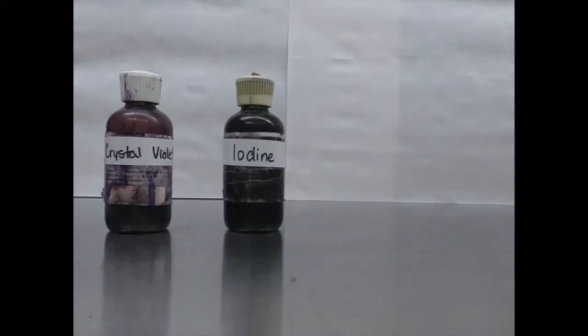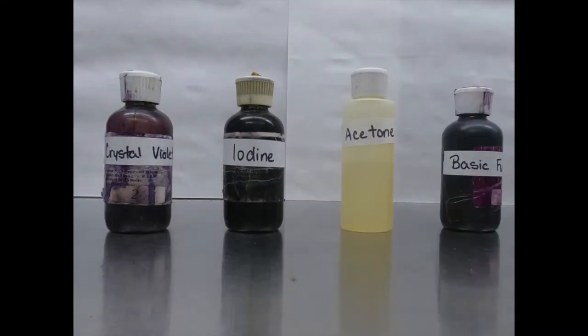There's four basic reagents required for a gram stain: crystal violet and grams iodine for our primary stain, acetone for decolorization, and basic fusion or safranine for our secondary stain.